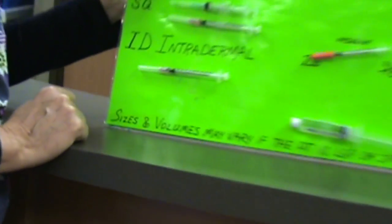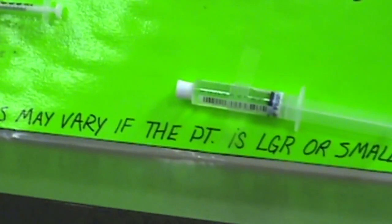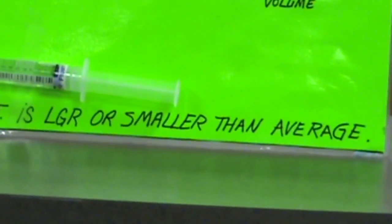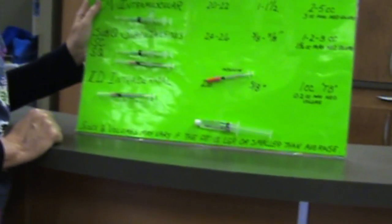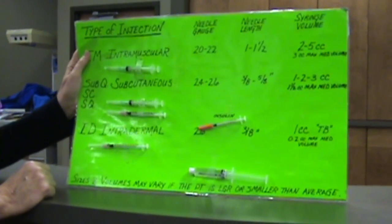Down here you can see sizes and volumes may vary if the patient is larger or smaller than average. So it kind of varies a little bit with your patient. But this is kind of the general description.